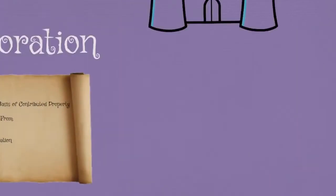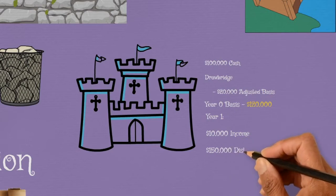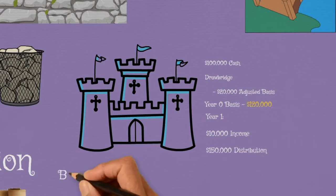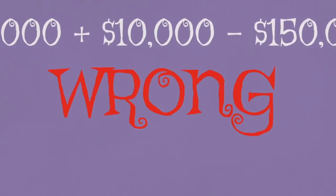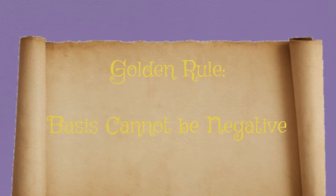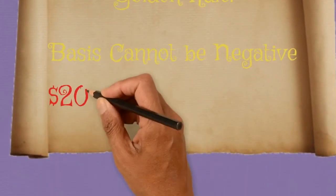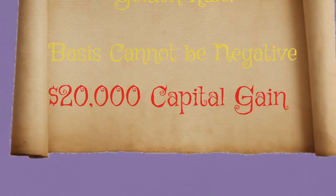Second, basis is reduced by distributions — and distributions are one of our pillars. In year one, the S-corp CASEL has $10,000 of income, and the corporation makes a distribution of $150,000. So our initial basis plus $10,000 income, less $150,000, will give us a basis of negative $20,000, right? Wrong. The golden rule of basis: basis cannot be negative. With the $10,000 income we have $130,000 basis, and not enough to cover the $150,000 distribution. A distribution in excess of basis is a taxable gain to the taxpayer. So in this situation we have $20,000 of taxable gain. This is one reason why it's so important to track basis to ensure distributions aren't made that result in tax.